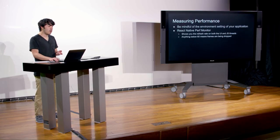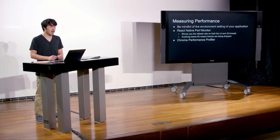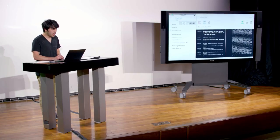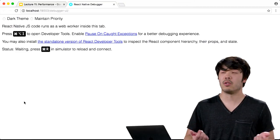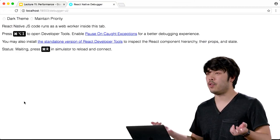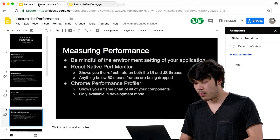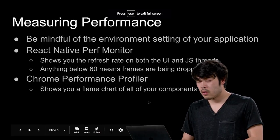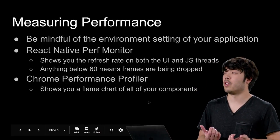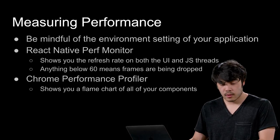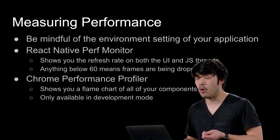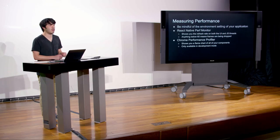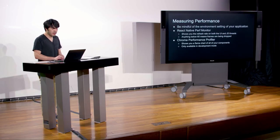For more detail, we can use the Chrome Performance Profiler. We can run our JavaScript inside Google Chrome, which shows a flame chart of all our components. Note that this is only available in development mode — if running in production mode, this option will not be available.